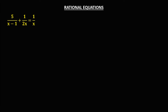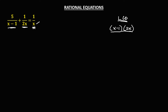Then for this given, with different denominators, find the LCD. To find the LCD, write first the first denominator, so that's x minus 1, then times the second denominator, so times 2x, then times the third denominator. Since the third denominator is x and we already have x, there's no need to add this third denominator. So the LCD is x minus 1 times 2x.